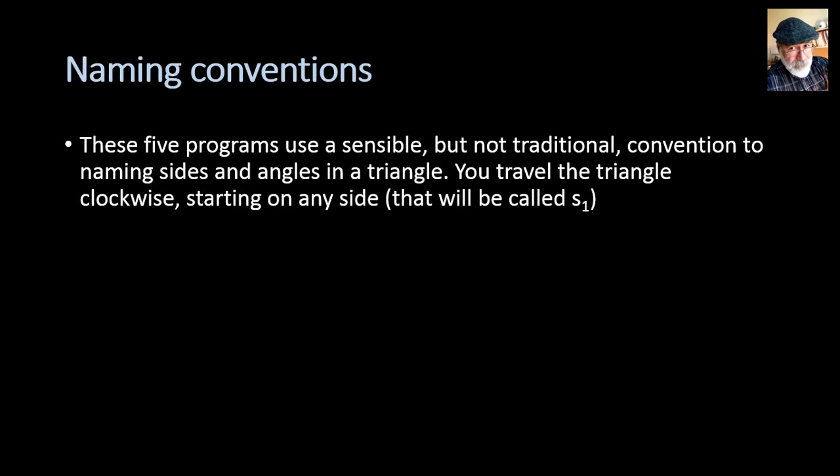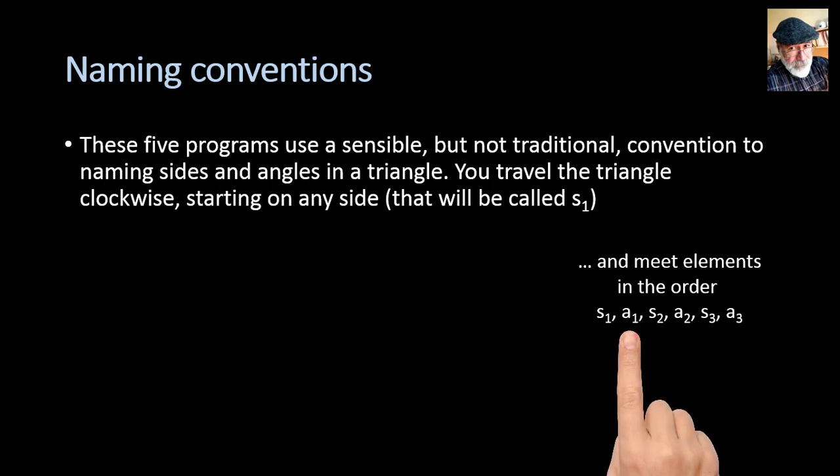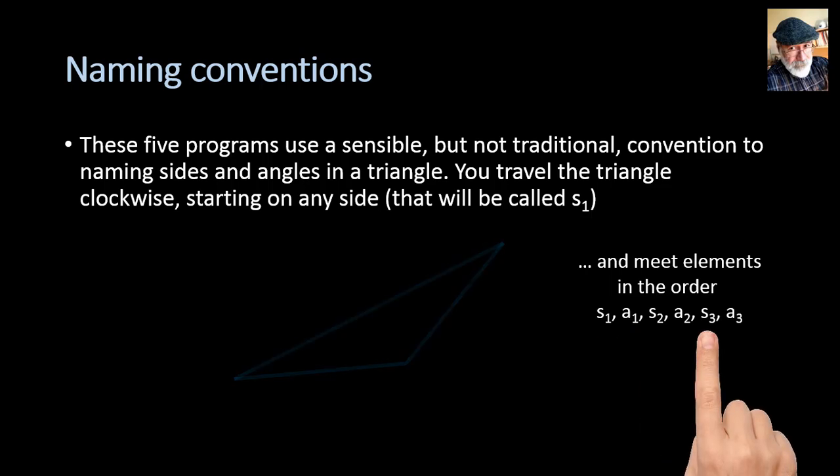Naming conventions. These five programs use a sensible but not traditional convention to naming sides and angles in a triangle. You travel the triangle clockwise or counterclockwise starting on any side, and that side will be automatically side 1. And automatically, all the other elements in the triangle as you travel are side 1, angle 1, side 2, angle 2, side 3, angle 3.